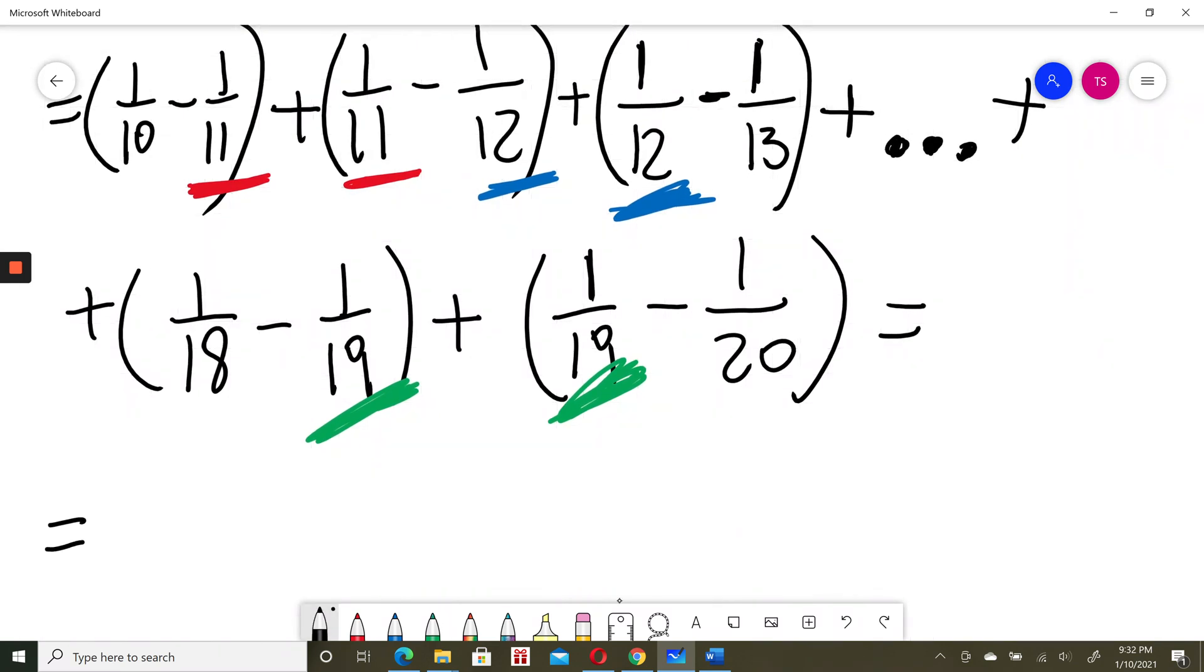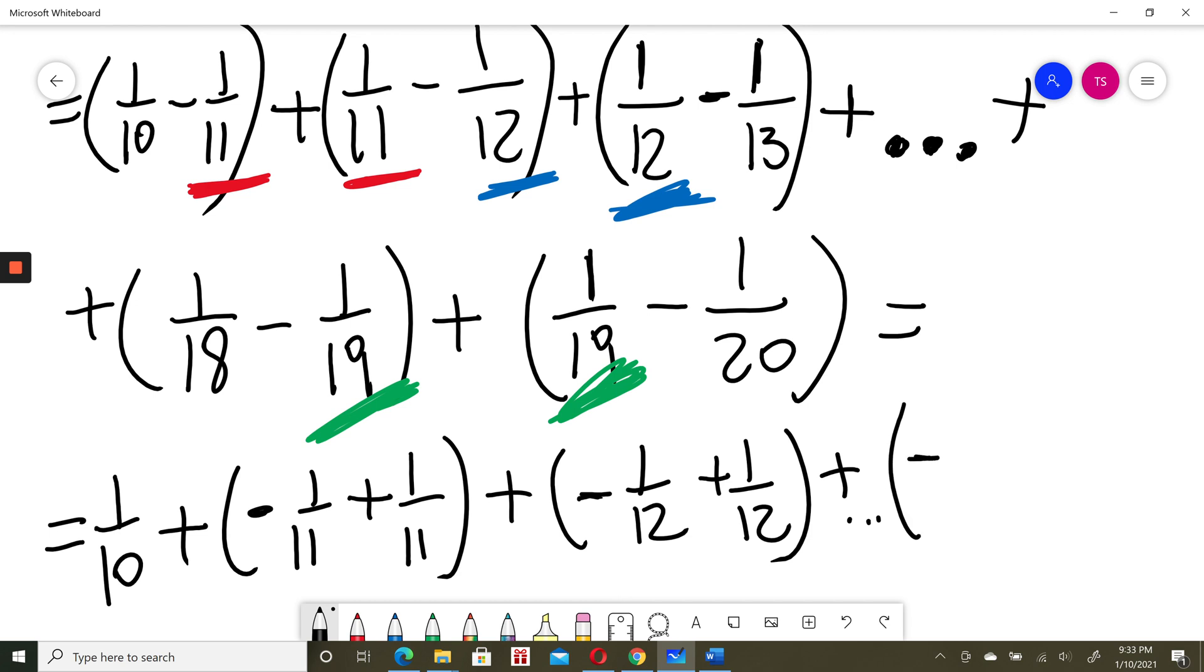So this would be equal to, I would just leave 1 over 10 plus minus 1 over 11 plus 1 over 11, plus the blue things minus 1 over 12 plus 1 over 12, plus this would be quite similar until minus 1 over 19 plus 1 over 19.